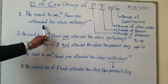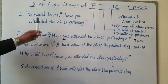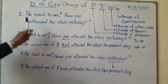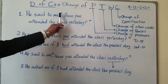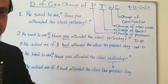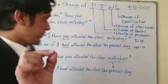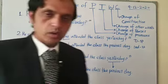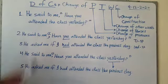Look at this sentence: 'He said to me, "Have you attended the class yesterday?"' This is a direct speech and we have written inverted commas here. When we want to change this direct speech into indirect speech, we will first delete and remove all the commas — this comma and these two inverted commas will be deleted. This is step one: deletion of commas.